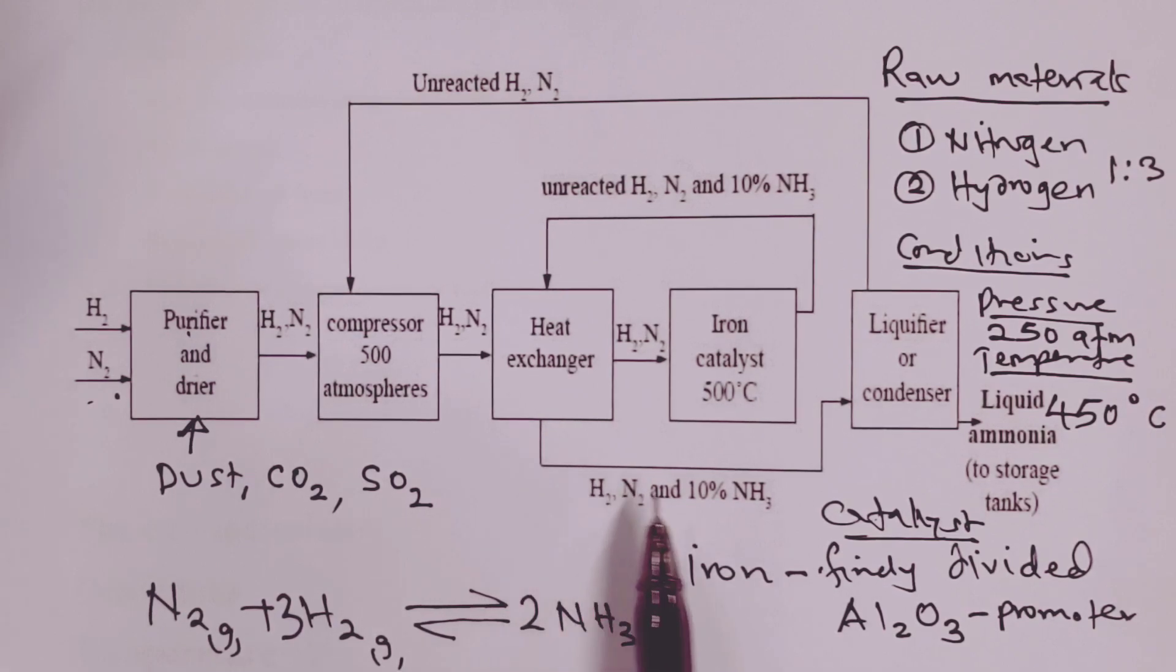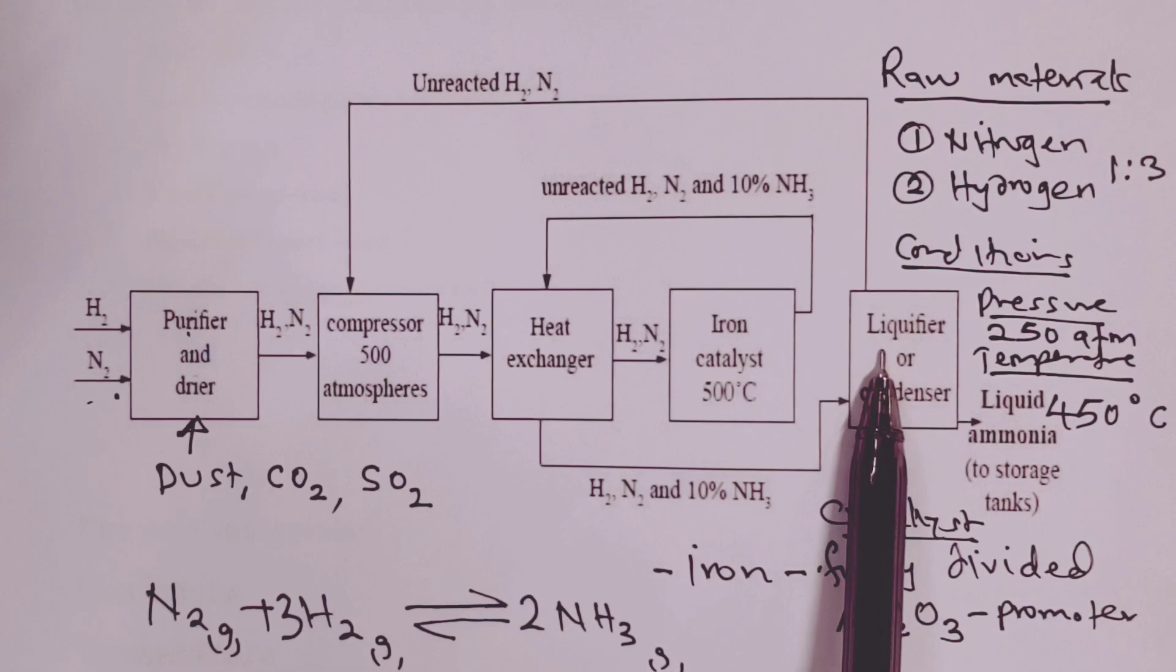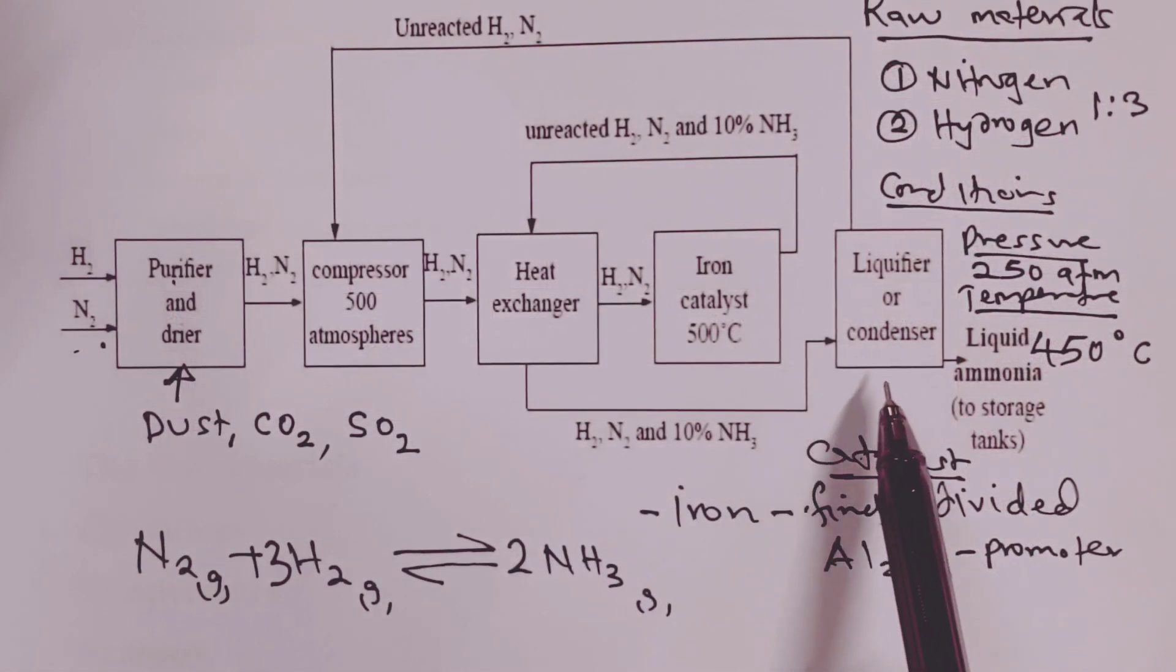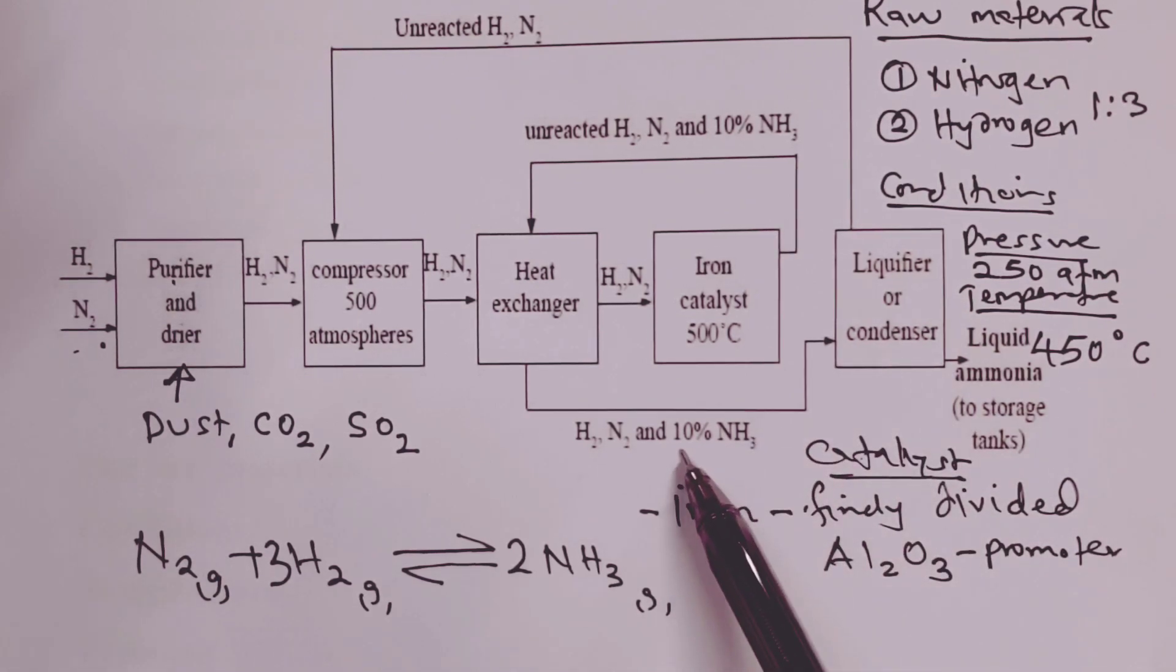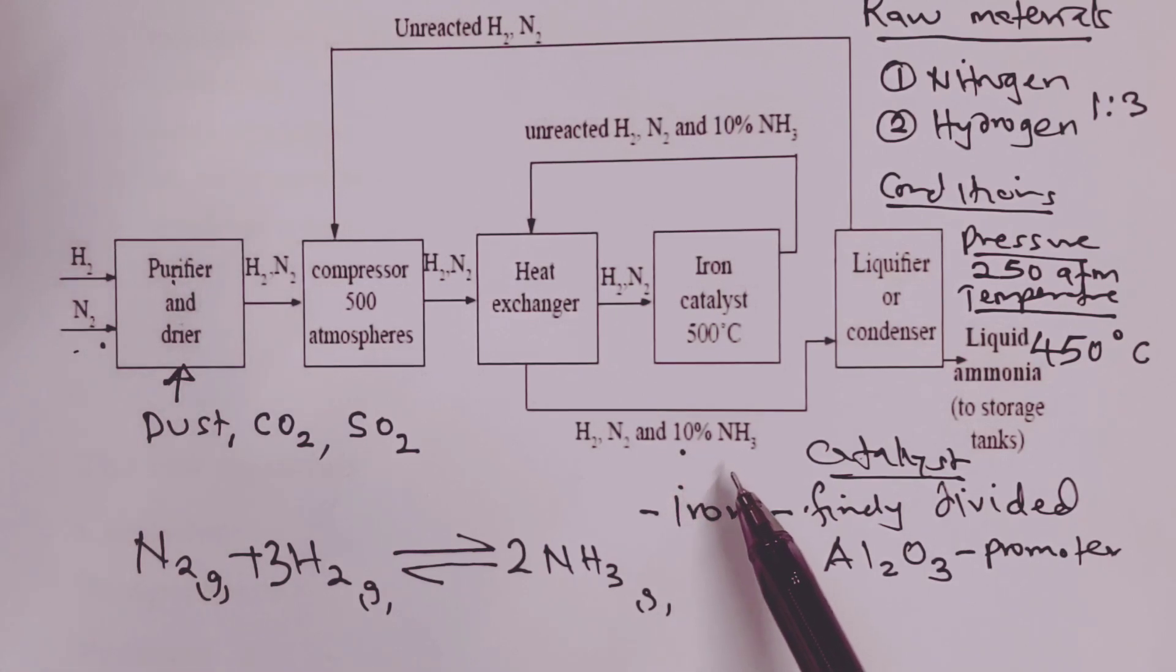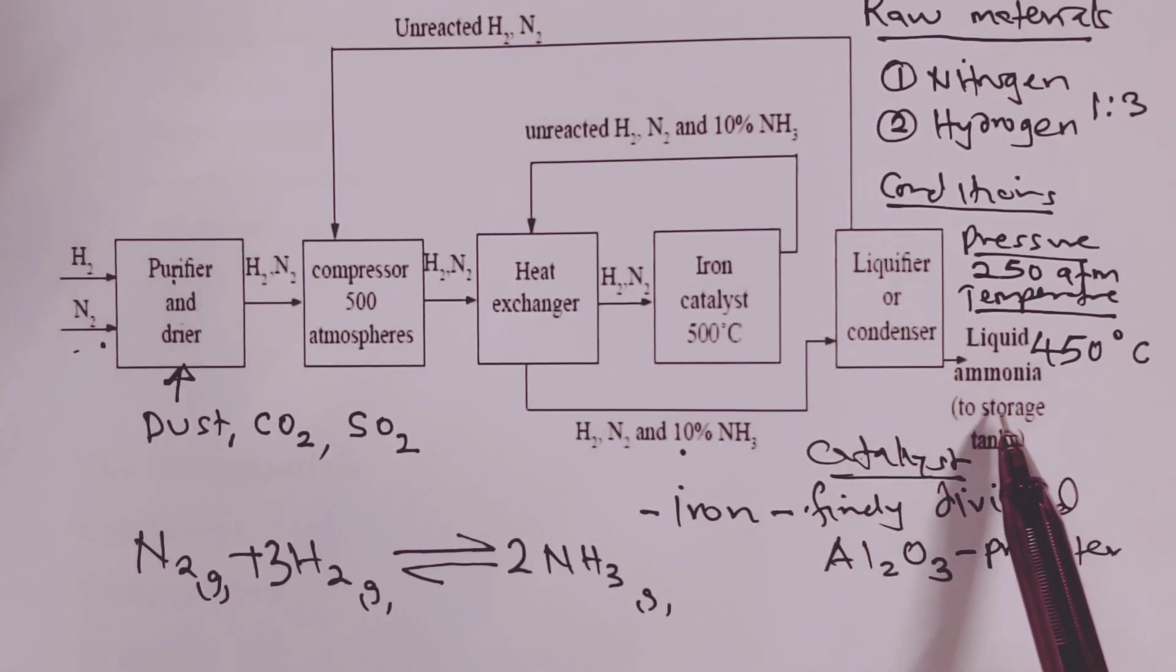Once that has been done, we feed this into the liquefier or the condenser. In the condenser, the ammonia, 10% of it, is liquefied. And then we store the liquid ammonia to storage tanks ready for the market. Now, if you don't liquefy ammonia, some factories also pass it through a spray of water so that we are able to obtain ammonia solution.